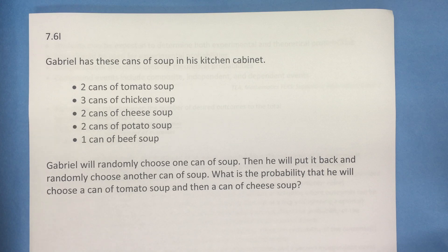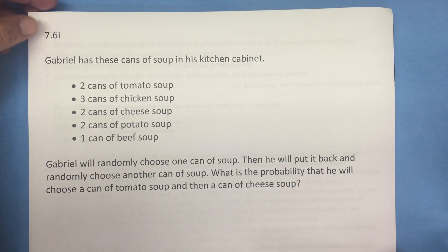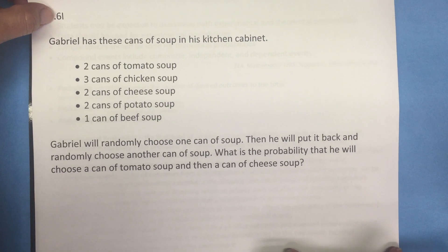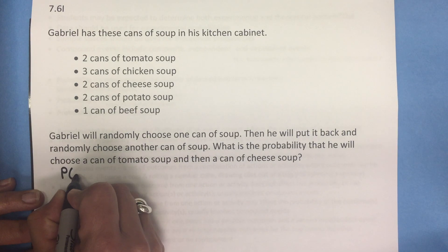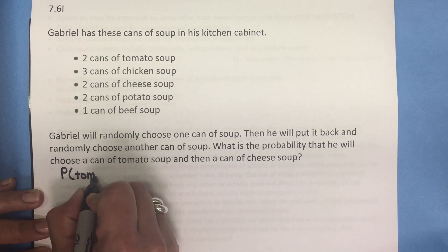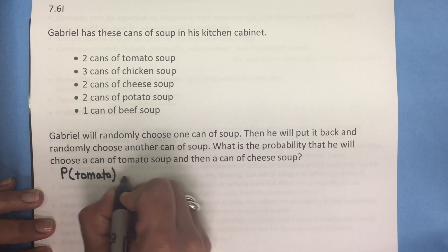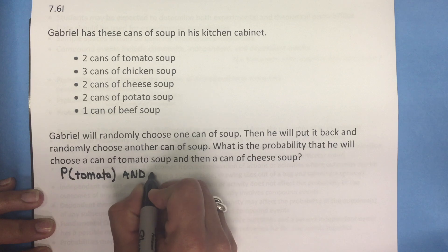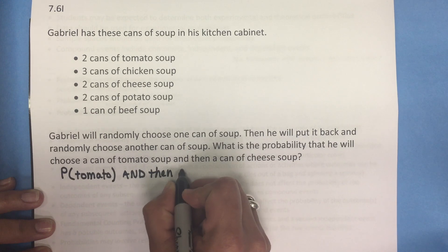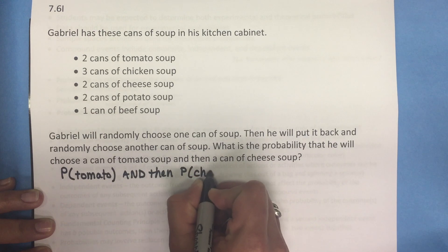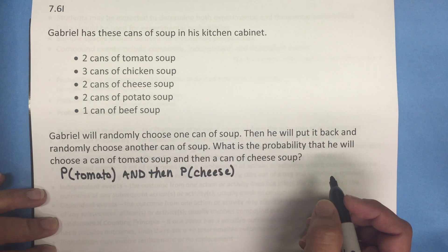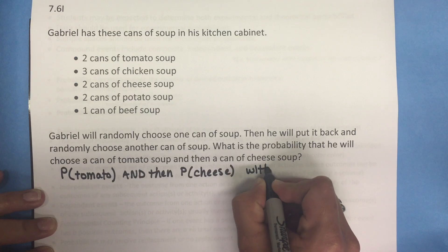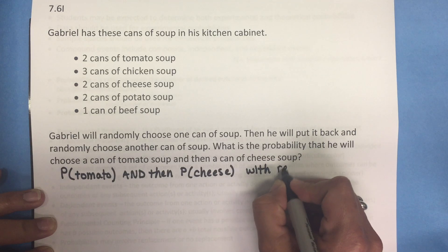What is the probability that he will choose a can of tomato soup and then a can of cheese soup? So what we're looking for is the probability that Gabriel picks tomato soup and then cheese soup. Since he puts the first can back, this problem is with replacement.